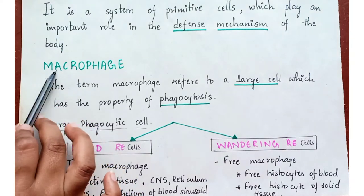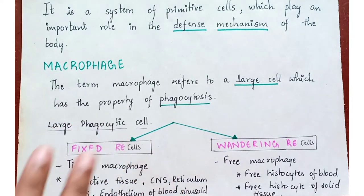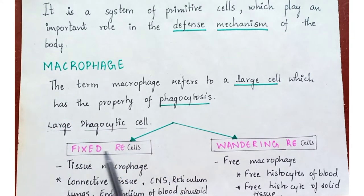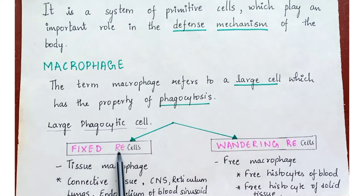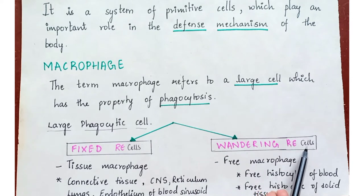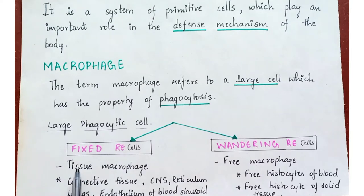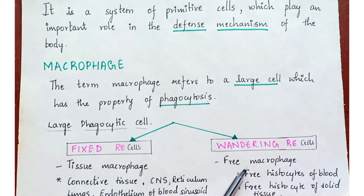Macrophages are of two types: fixed reticulo-endothelial cells and wandering reticulo-endothelial cells. Fixed reticulo-endothelial cells are also called tissue macrophages — they are fixed in tissues. Wandering reticulo-endothelial cells, as the name suggests, are free macrophages.